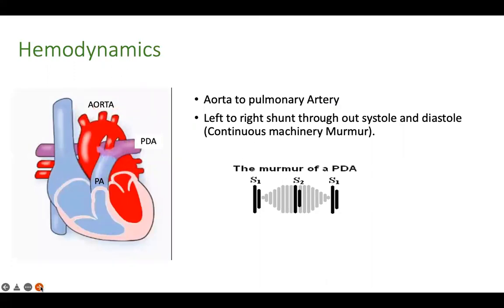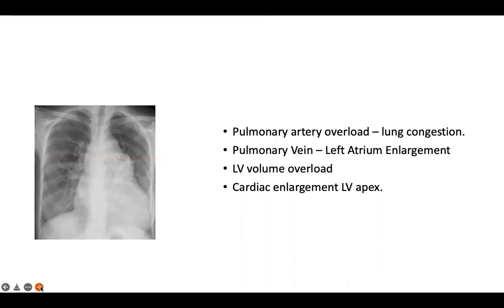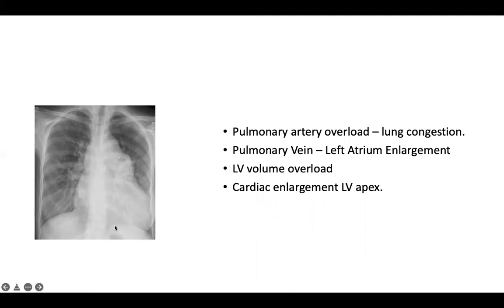The blood flowing from the aorta to the pulmonary artery goes to the lungs, causing lung congestion. This congestion is responsible for recurrent respiratory infections as well as tachypnea in case of CCF. This increased blood returns to the left side of the heart — to the left atrium through the pulmonary vein — and is responsible for left atrial enlargement. From the left atrium, the increased blood goes to the left ventricle, causing cardiac enlargement and an LV apex.